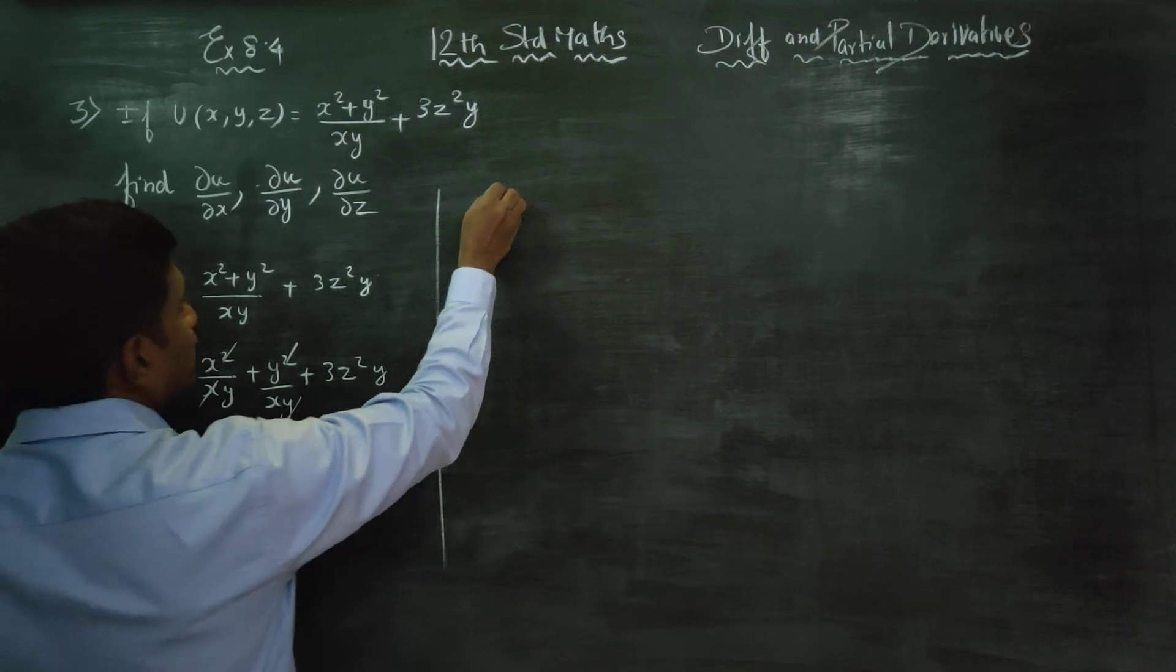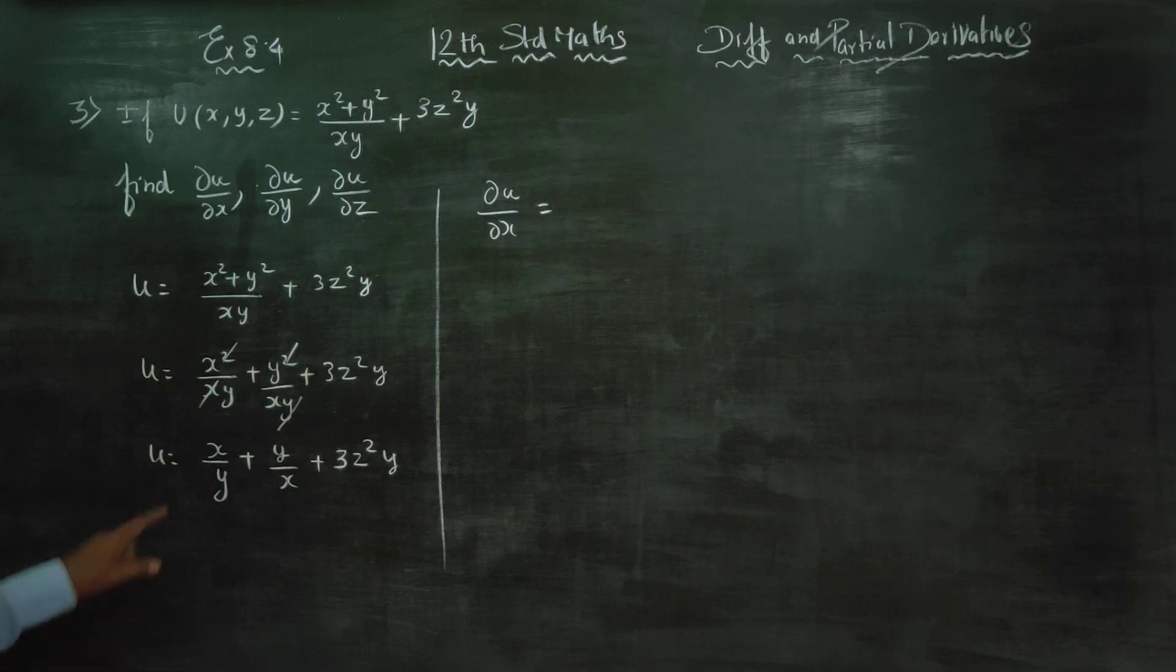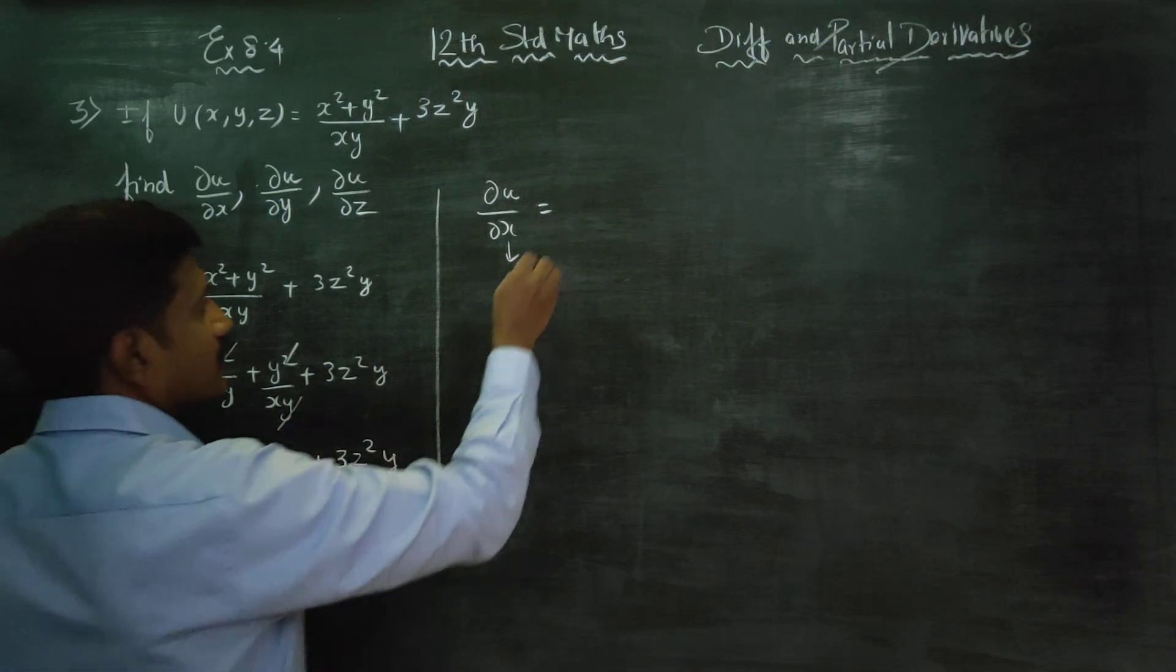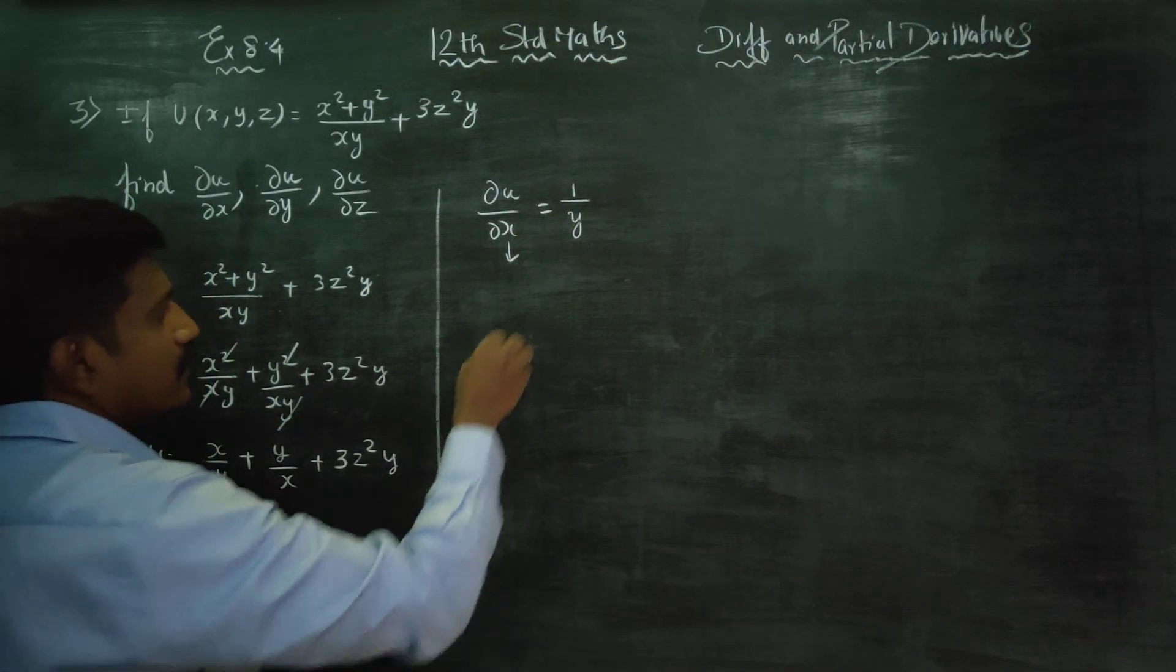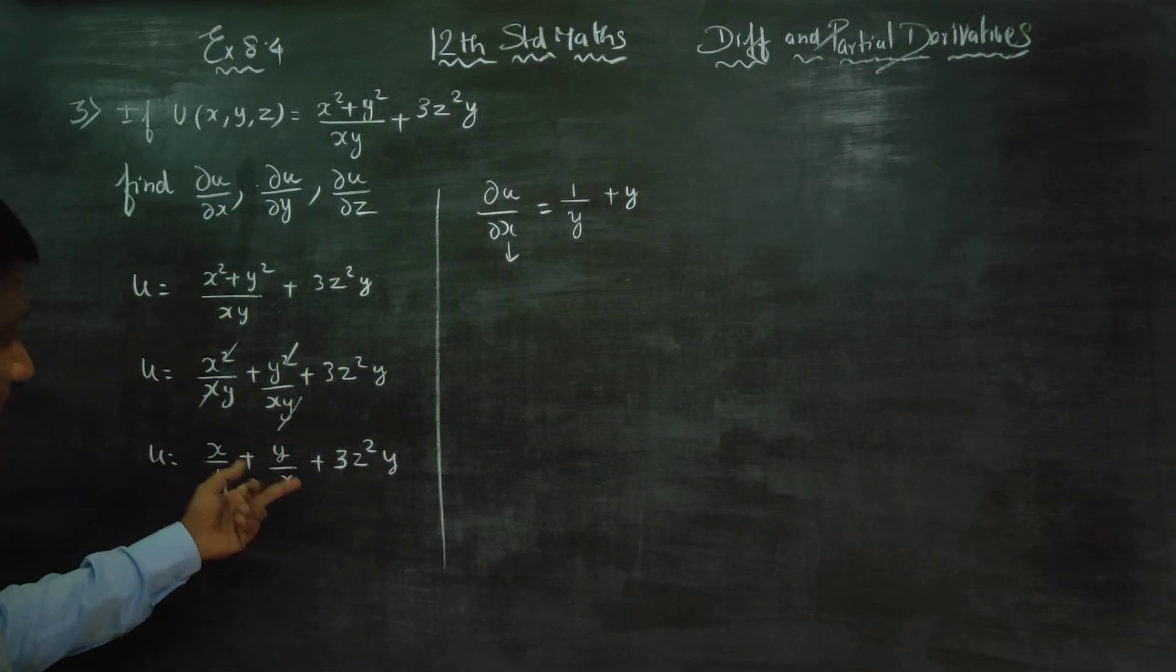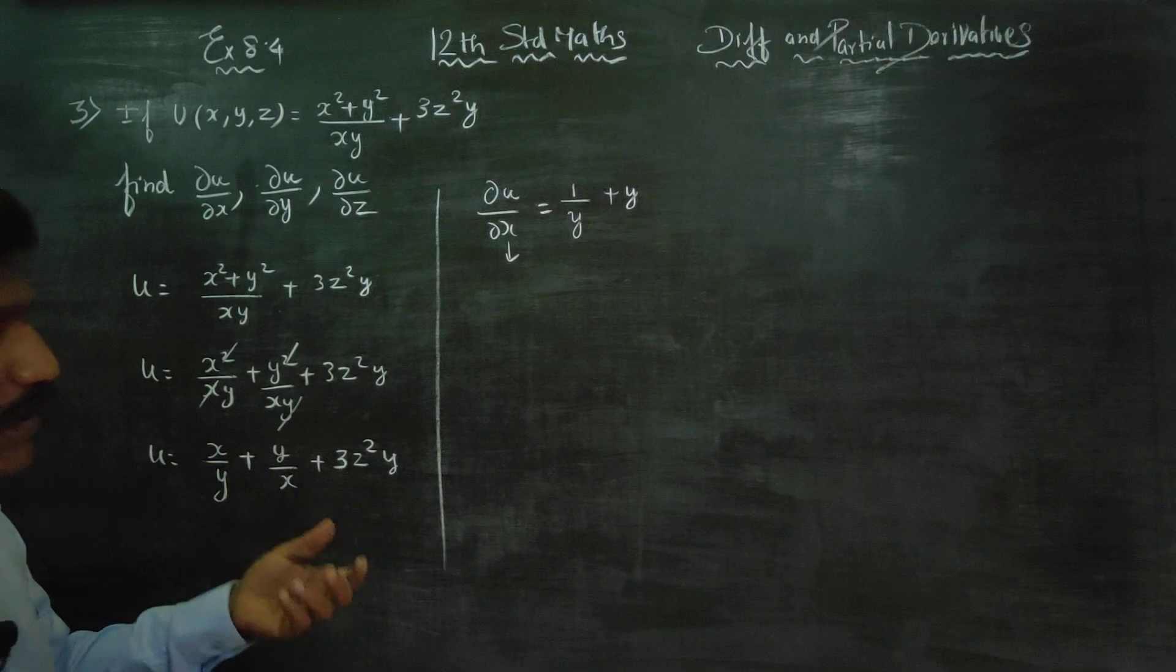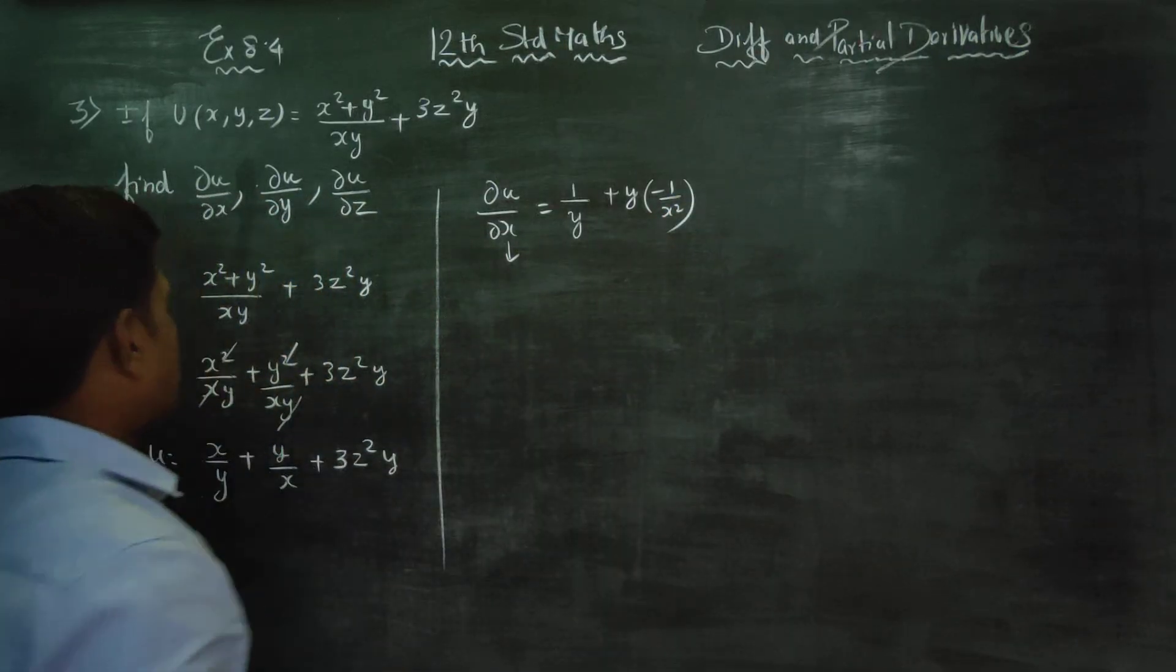∂u/∂x: when differentiating with respect to x, y is a constant. Therefore you will be getting 1 by y. Plus y is constant, differentiating x gives 1 by x, which differentiates to minus 1 by x square.